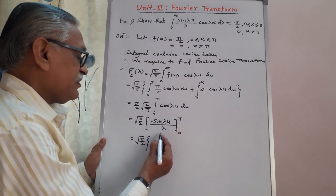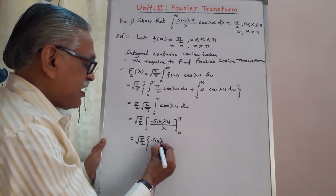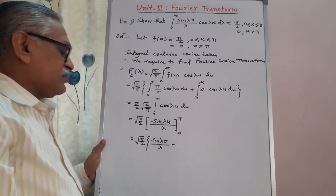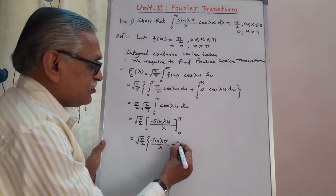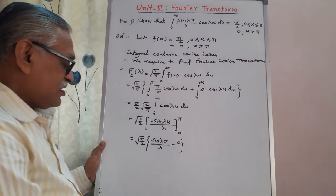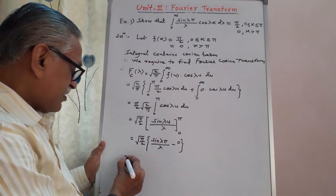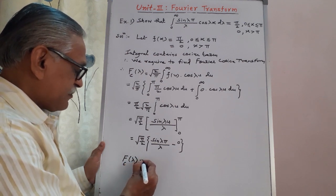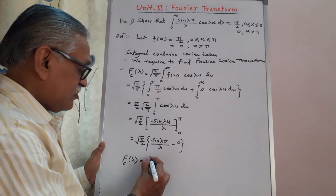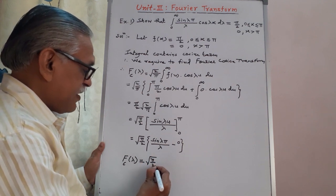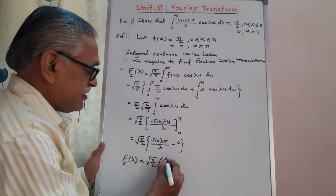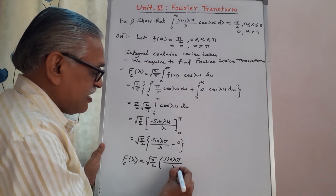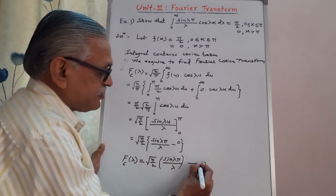Substituting the upper limit u = π, we get sin(λπ)/λ, minus the lower limit where sin(0) = 0. Therefore, the Fourier cosine transform is Fc(λ) = √(π/2) × sin(λπ)/λ. We call this equation 1.